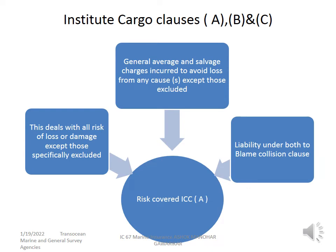Institute Cargo Clauses A, popularly known as ICCA, with the latest clauses being 2009, is an all-risk policy where the perils covered are not listed. Every peril is covered provided it is not falling under the exclusions provided in the policy. This is very peculiar. Liability under the both-to-blame collision clause is there. General average and salvage charges incurred to avoid loss from any cause except those excluded are covered. A participant should know about ICCA, B, and C — A is all risk, B has slightly more perils than C, and C covers minimum risk with listed perils.